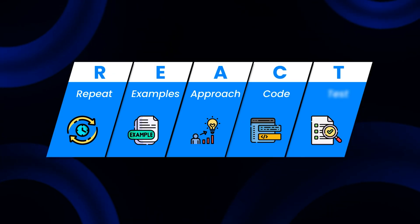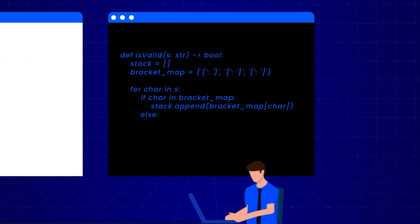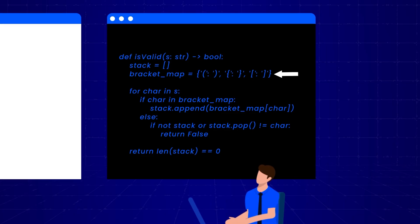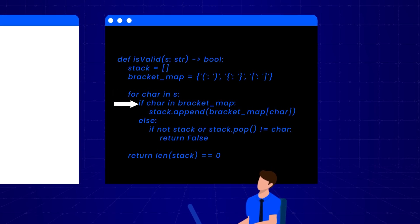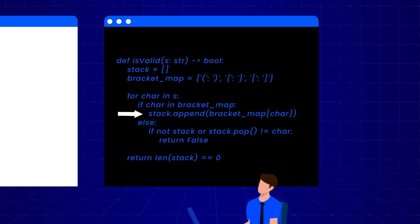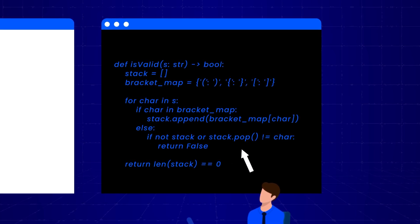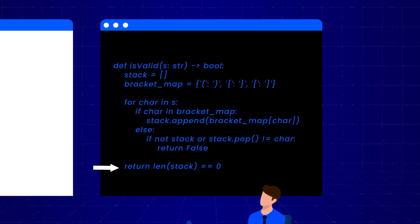C stands for Code. Only now, after all this preparation, do we actually start coding. By this point you should have a clear idea of what you are doing, making implementation much smoother. As I code, I explain my thought process: 'I am using a dictionary to map closing brackets to their corresponding opening brackets. This makes our code more flexible — if we ever need to add more types of brackets, we can simply update this dictionary. The core logic is in the for loop. If we encounter an opening bracket, we use the dictionary to find the corresponding closing bracket and push it onto the stack. If we encounter a closing bracket, we check if the stack is empty — an empty stack means a closing bracket without a matching opening bracket. If the stack is not empty, we check if the last opening bracket doesn't match our current closing bracket. In both cases, we return false. Finally, we return true if the stack is empty, meaning all opening brackets are closed properly.'